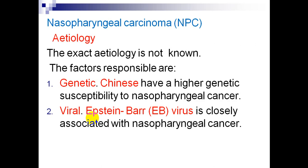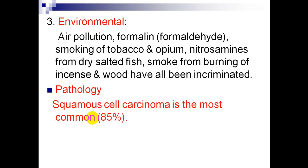Our second subject is nasopharyngeal carcinoma. The exact etiology is unknown. Responsible factors include: (1) genetic factors — Chinese populations have higher genetic susceptibility; (2) viral infection — Epstein-Barr virus is closely associated with nasopharyngeal carcinoma; (3) environmental factors — air pollution, formaldehyde, smoking of tobacco and opium, nitrosamines from dry salted fish, and smoke from burning incense have all been incriminated. Burning of incense is important as it is carcinogenic for the nasopharynx and should be avoided.